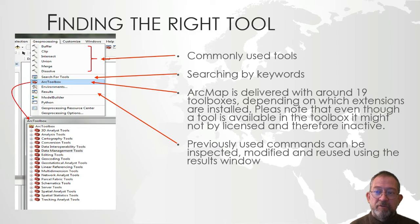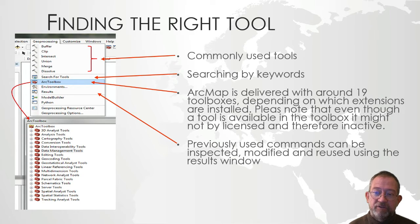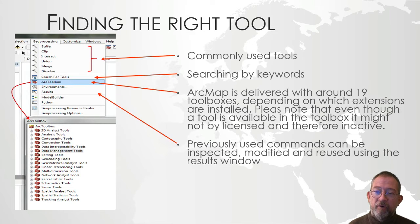Just like from the selection menu you have access to the Select by Layer and Select by Attribute tools without having to go into the toolboxes. Underneath these shortcut tools we have links to four of the most commonly used windows or window panes when you are working with toolboxes.